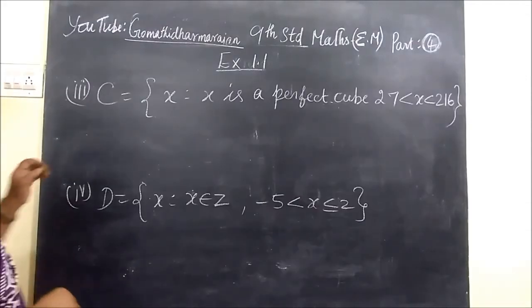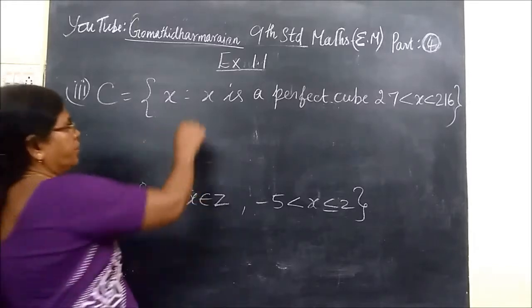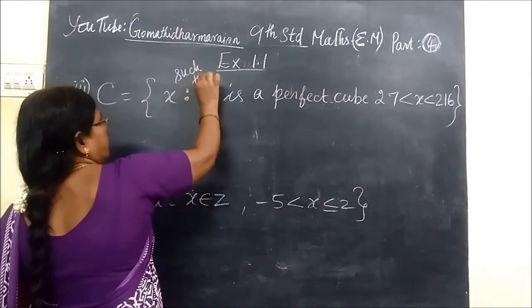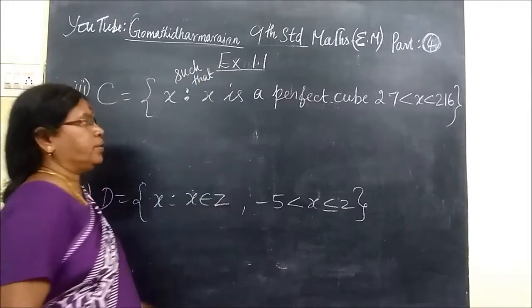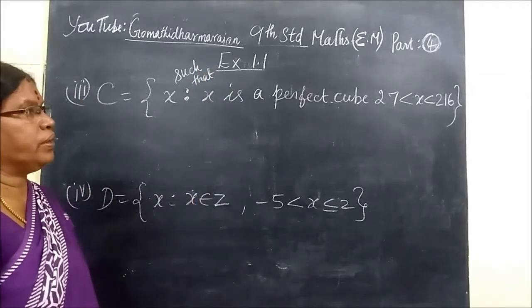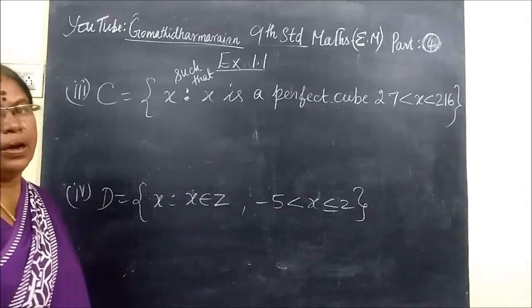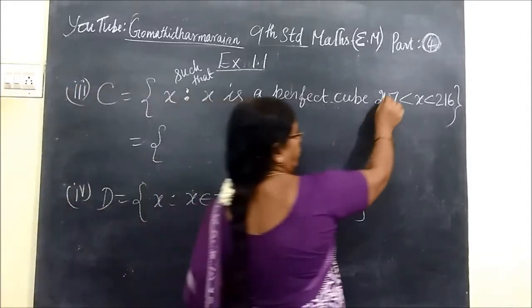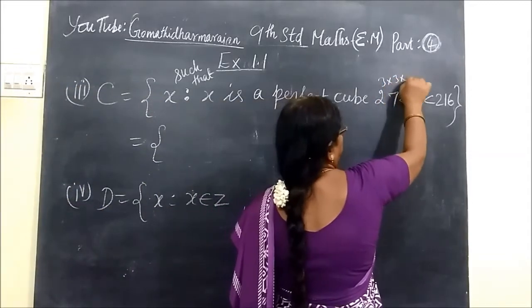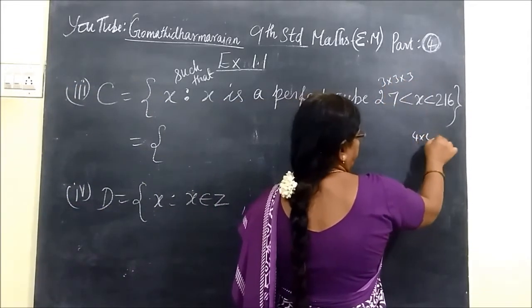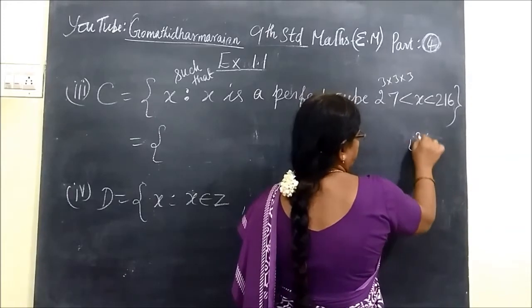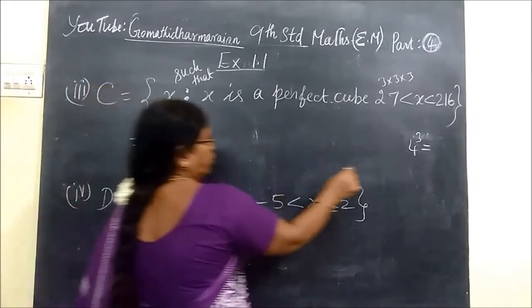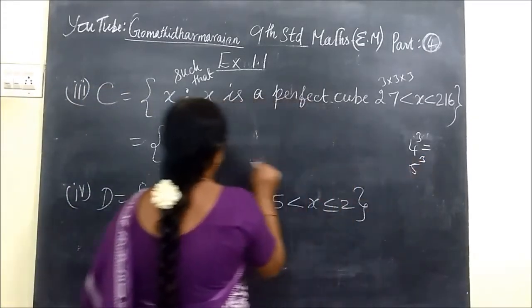Now see the third question: set of all x such that, this we read it as such that, set of all x such that x is a perfect cube, then 27, x, and x between 27 and 216. You are writing in the roster form. This one is 3 x 3 x 3, 3 cube. Next one should be 4 cube. 4 cube equal to 64. Then next we are writing 5 cube, 5 cube is 125.